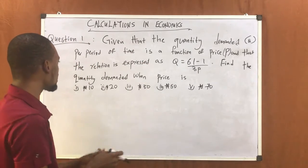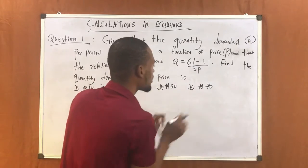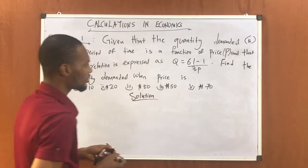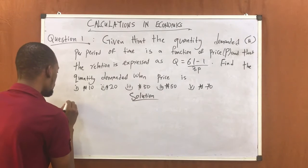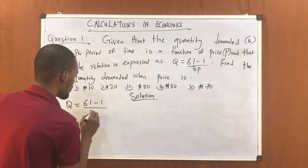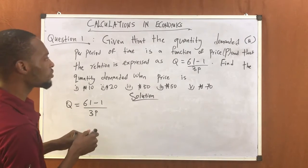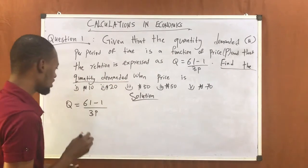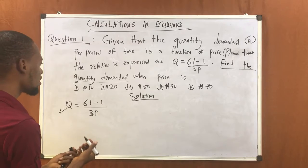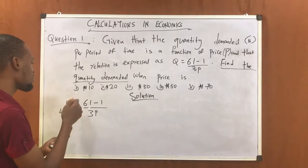Now, what are they asking us to do? They said find the quantity demanded when price is 10, 20, 13, 15, and 17 Naira. So let's write down what we know: Q equals 61 minus 1 over 3P. We are asked to find Q — the quantity demanded. Anytime they ask you to find something, it means the thing is not given or it is unknown. Find Q because it's not given.